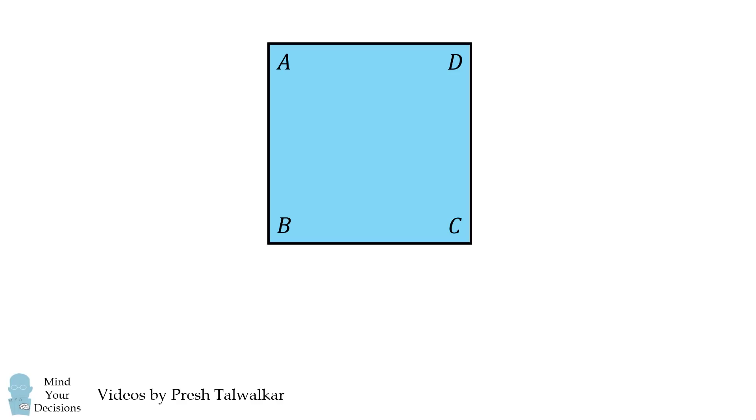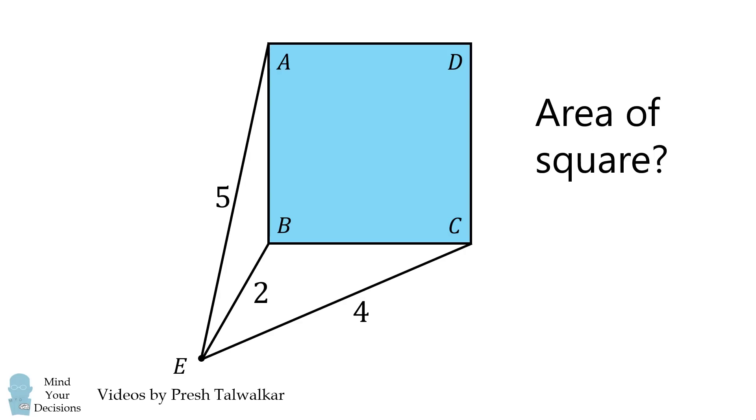ABCD is a square. Point E is exterior to the square such that EA is equal to 5, EB is equal to 2, and EC is equal to 4. What is the area of square ABCD? I thank Elmer for the suggestion.